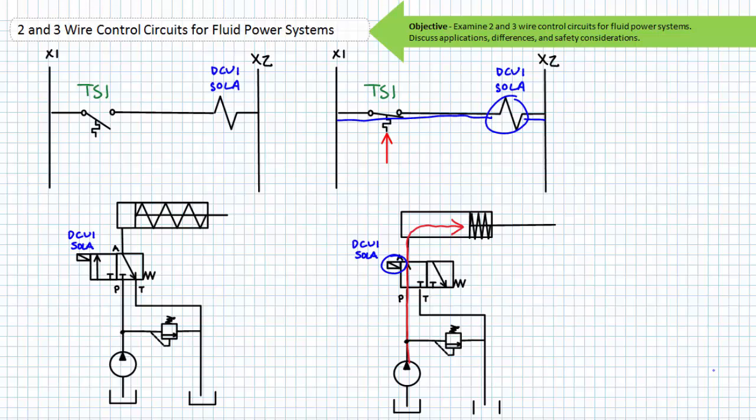This illustrates the basic function of a two wire control circuit. The hydraulically opened and closed exhaust vent cools the space with no human intervention, and electrical connection to the solenoid is made or broken at the direction of the temperature switch. The title 'two wire control circuit' is derived from the two wires leading to the controlling element — in this case, the temperature switch.